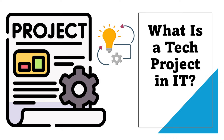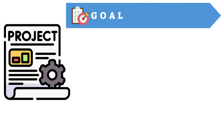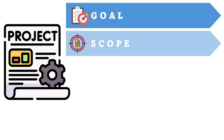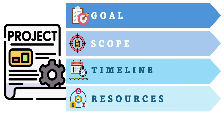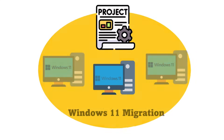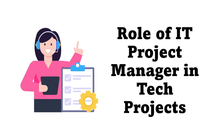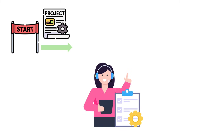Without further ado, let's get started. But first, what is a tech project in IT? A tech project is any planned, structured initiative where you use technology to solve a problem. It has a goal — what you want to achieve — scope, timeline, resources such as people, hardware, and software, and deliverables. Tech projects can be small like installing software, or large like a Windows 11 migration. Typically there's also a project manager assigned, who is responsible for planning, coordinating, and leading technology-related projects from start to finish.